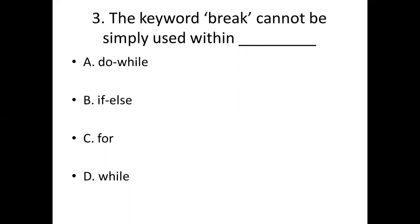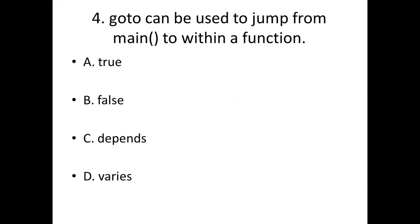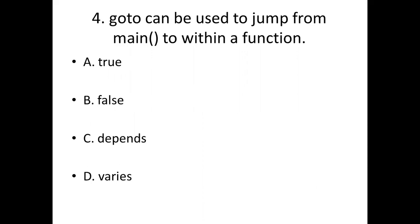Fourth bit. Goto can be used to jump from main function to within a function. Option A: true. Option B: false. Option C: depends. Option D: varies. Answer: Option B, false.